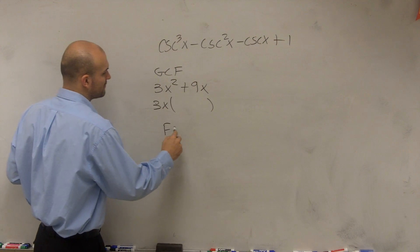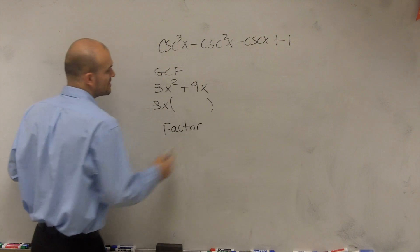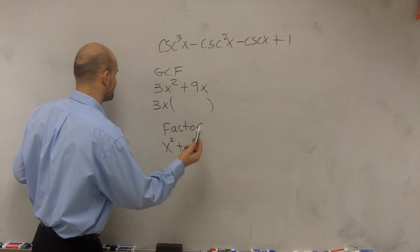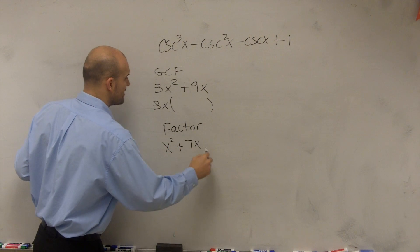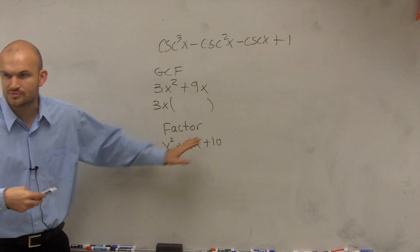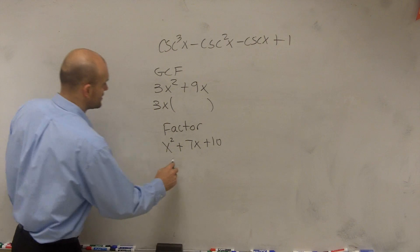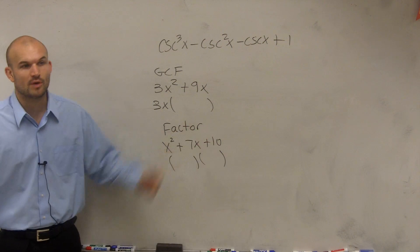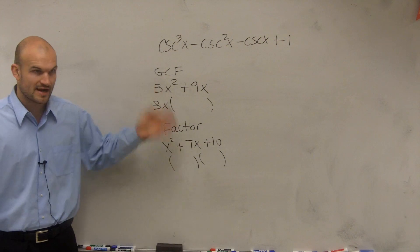The next kind of factoring we dealt with was when we had like a trinomial. So it would be like x² + 7x + 10. Whenever you saw a trinomial, then you could say, oh, it's going to be we're going to take two different binomials and multiply to factor. That was the factoring of trinomial.